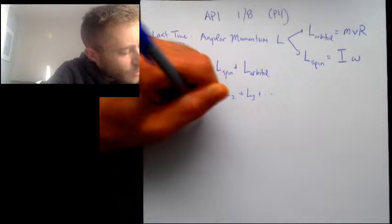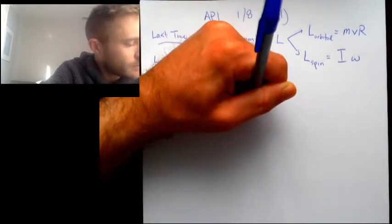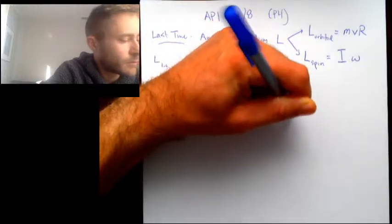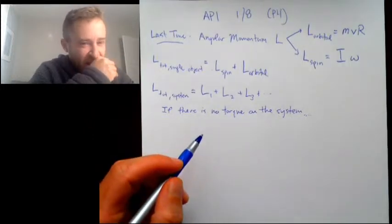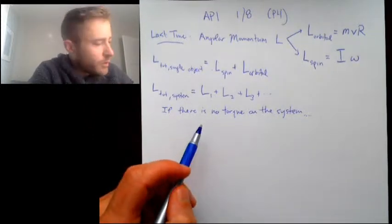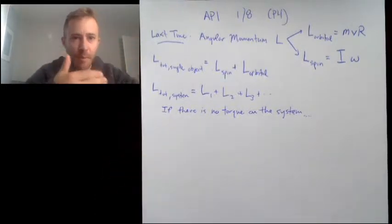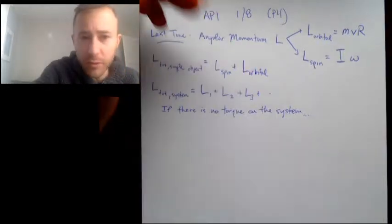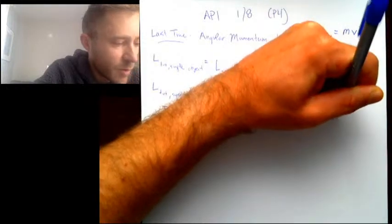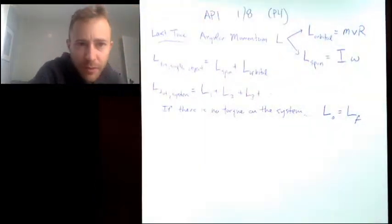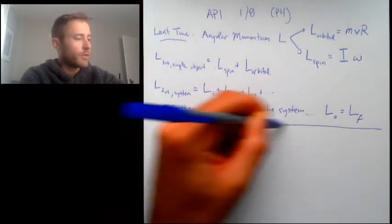If there is no torque on the system — and that's an important if — then the amount of spinning is going to stay the same. Torque changes Angular Momentum; torque makes things spin more or less. If you have no torque on the system, the initial Angular Momentum is going to equal the final Angular Momentum.